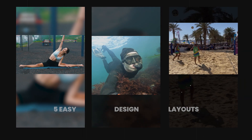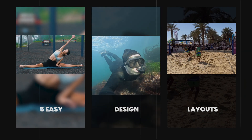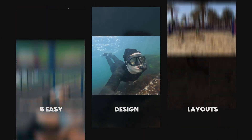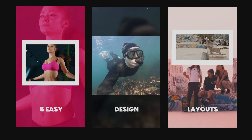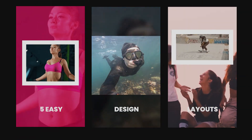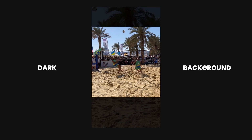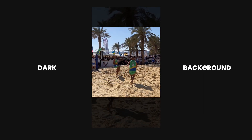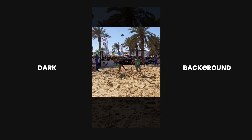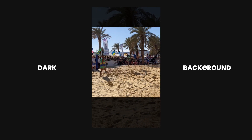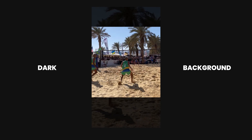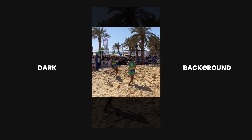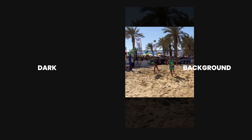In this video, I'm going to show you five easy-to-create design layouts for editing horizontal videos on a vertical sequence. So the first vertical design layout is one where we have a horizontal clip in the middle and in the background is the exact same horizontal clip, but it's just darkened and scaled up to fill the entire vertical sequence.